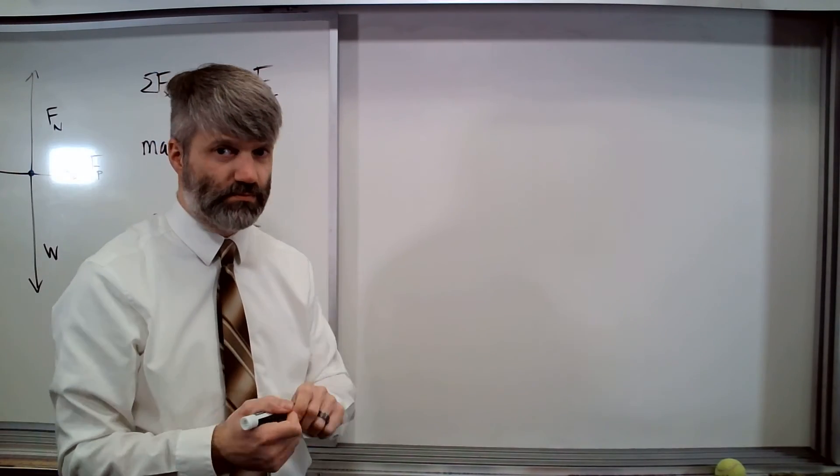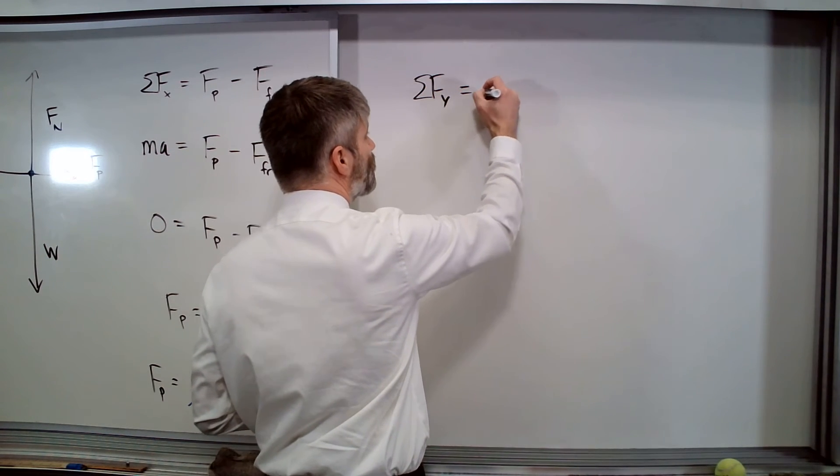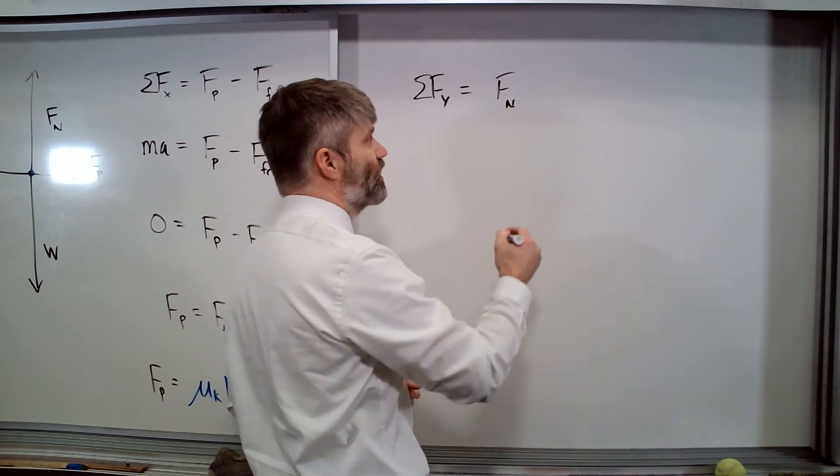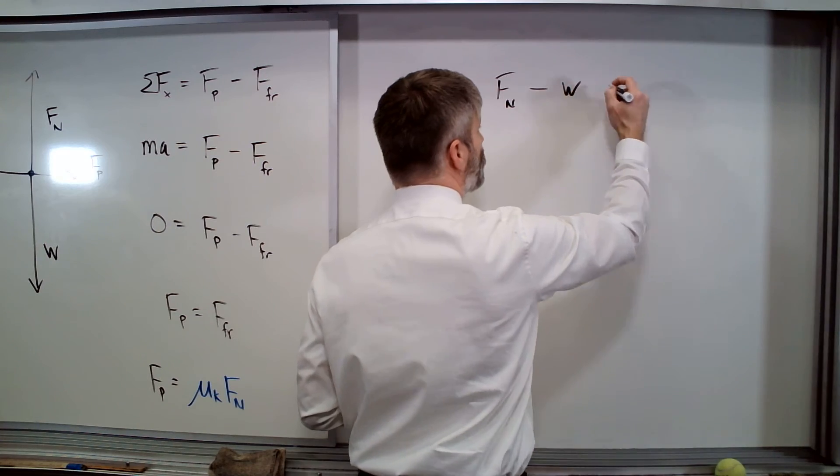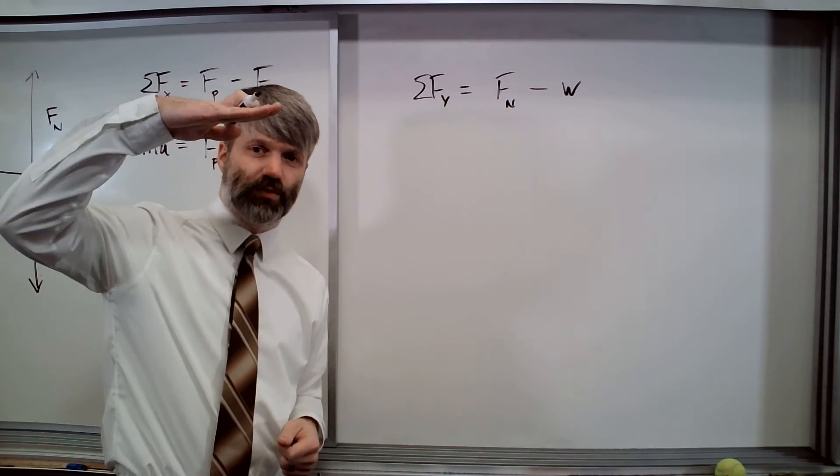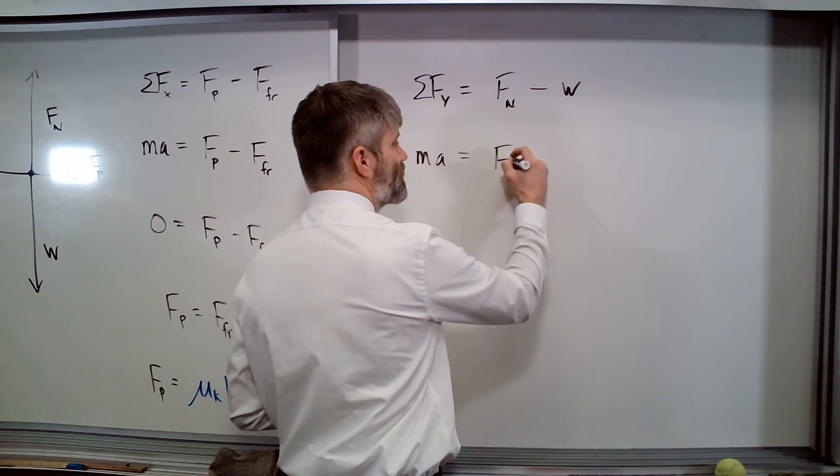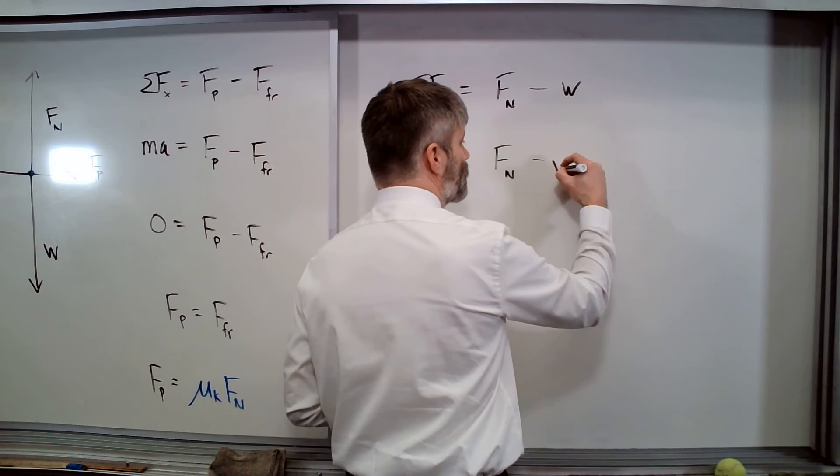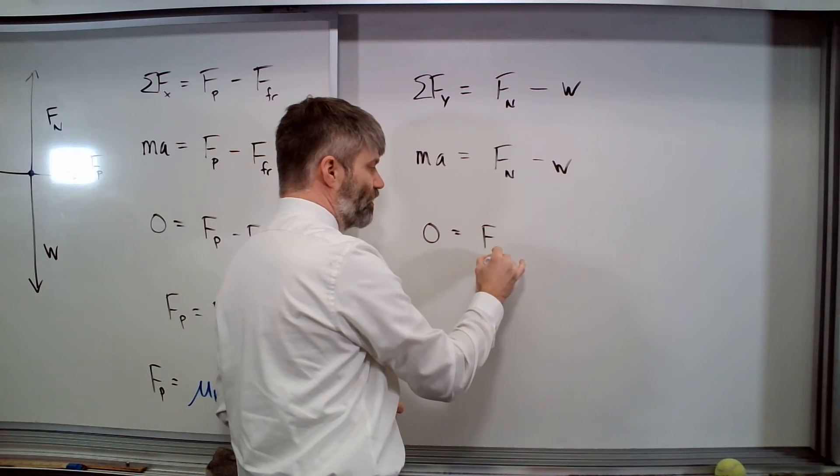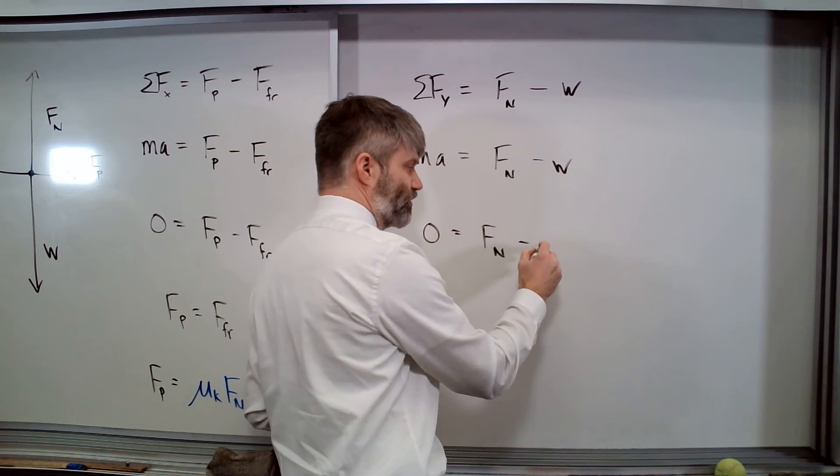For this problem, that means we're going to have to do the sum of the forces in the y direction too. We have the normal force in the positive direction and the weight in the negative direction. Once again, the sofa is neither accelerating upwards nor downwards. So when we apply Newton's law for the summation of forces, we'll see that's going to be zero, which equals Fn minus—and we also know that the weight is mass times the acceleration due to gravity.